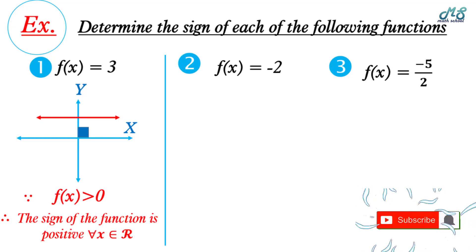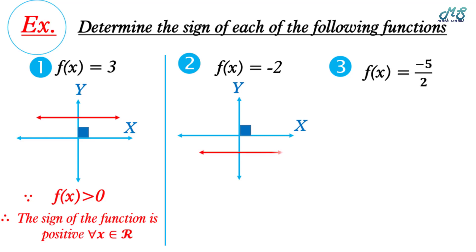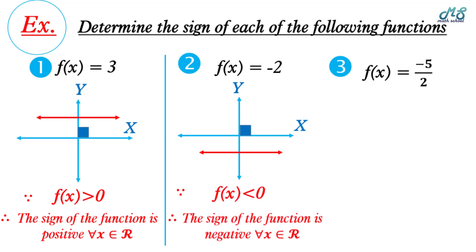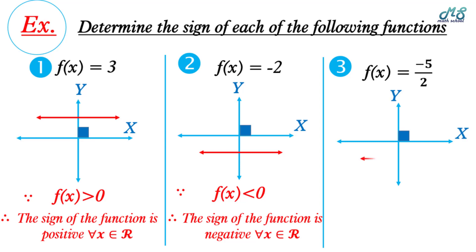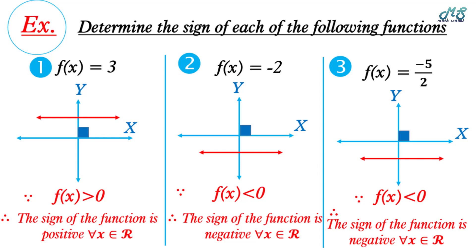Number two, f(x) = -2. It's represented by a line parallel to x and below the x-axis. f(x) is less than zero, so the sign of the function is negative for all x ∈ ℝ. Number three, f(x) = -5/2. It's represented by a line parallel to the x-axis; the constant is negative, so f(x) is less than zero. The sign of the function is negative for all x ∈ ℝ.